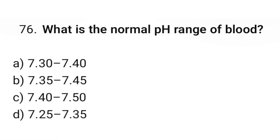Question number 76: What is the normal pH range of blood? The correct option is B. 7.35 to 7.45.